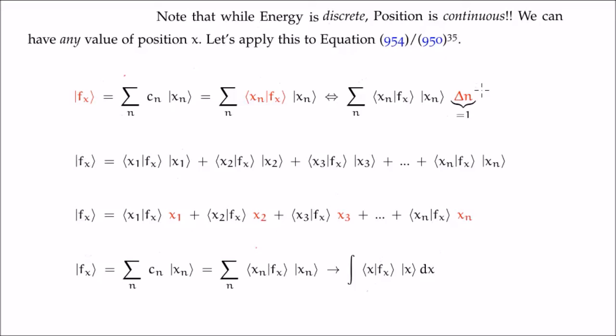And that means that we can shrink down the increment in n to be infinitesimally small. And that's exactly what happens when we do a Riemann sum. So delta n is going to become dx and our sum is going to become an integral.